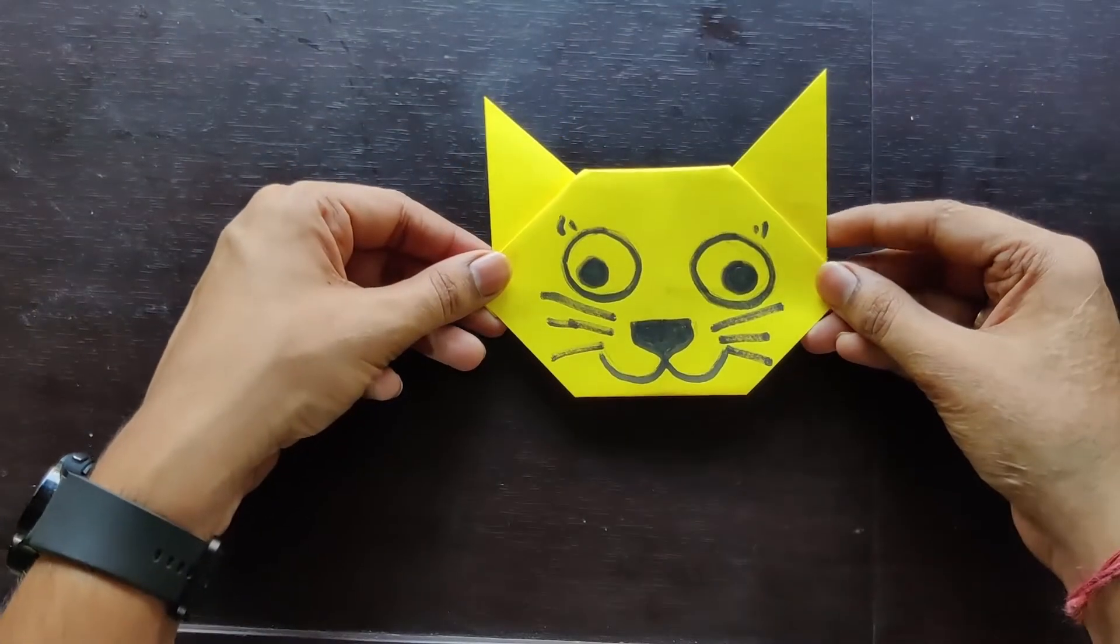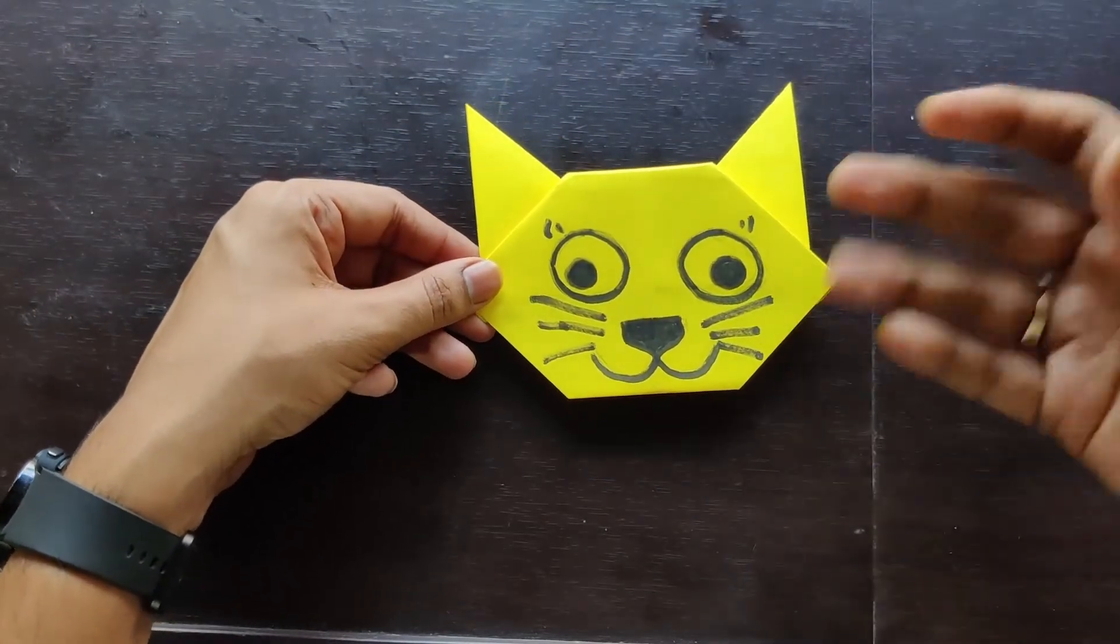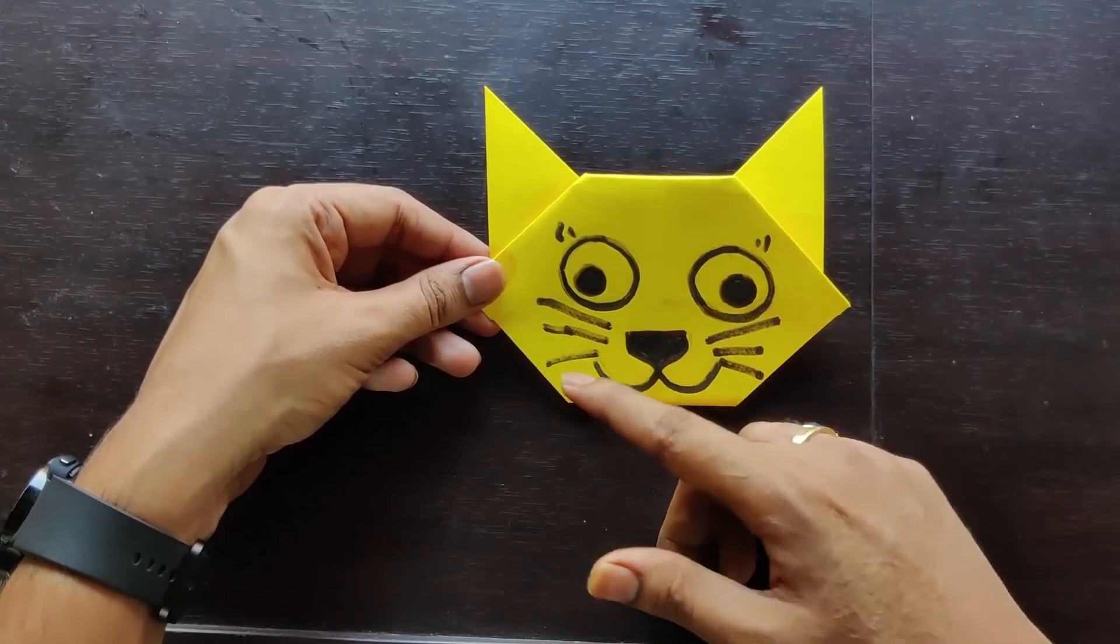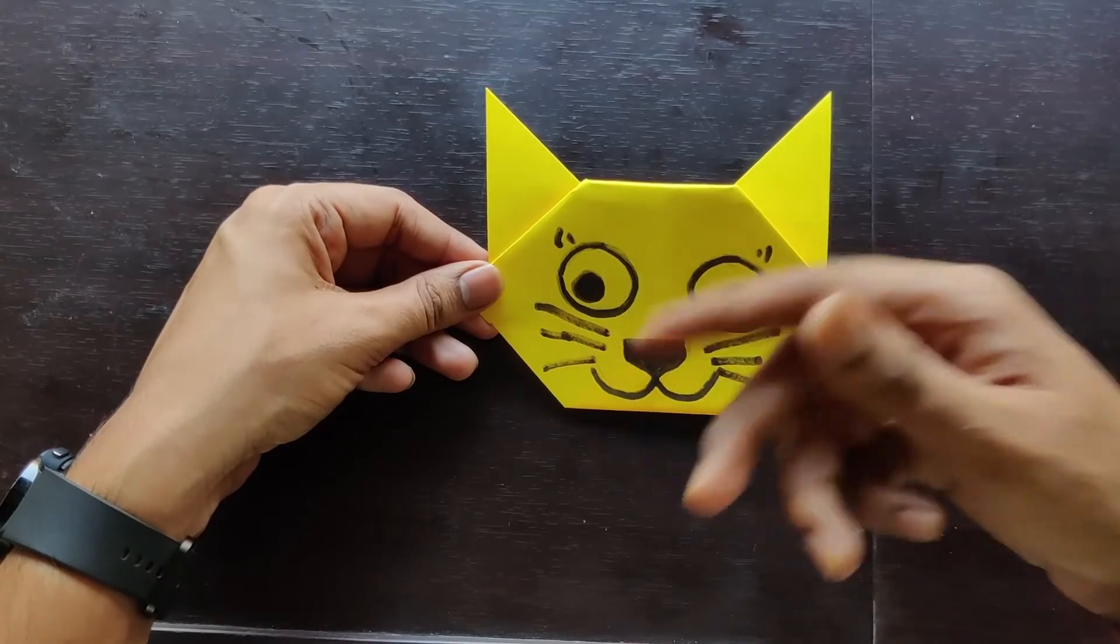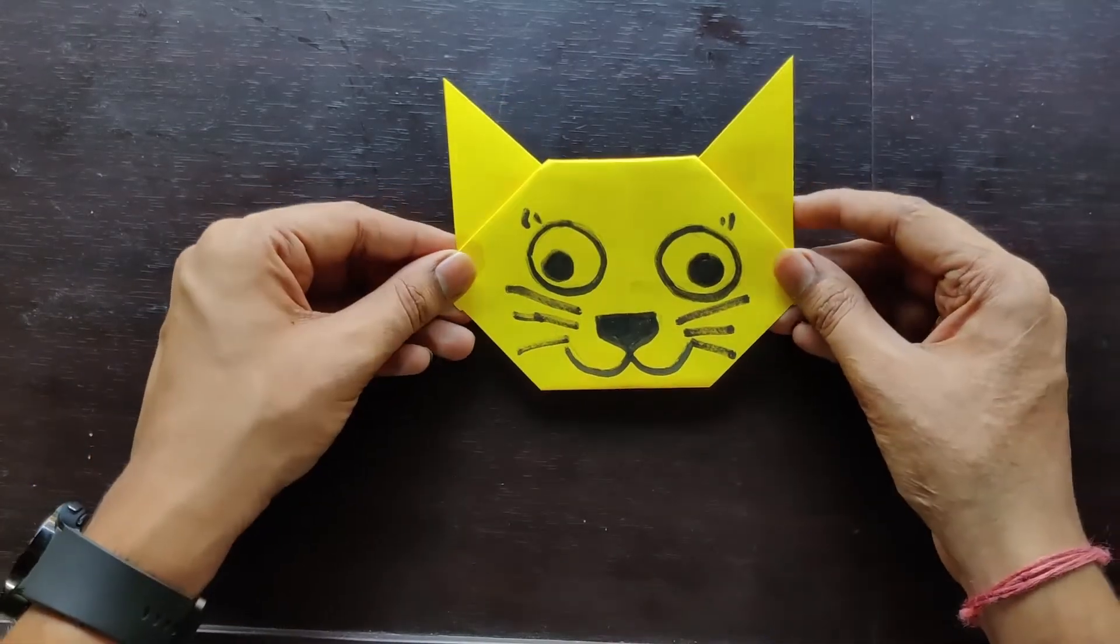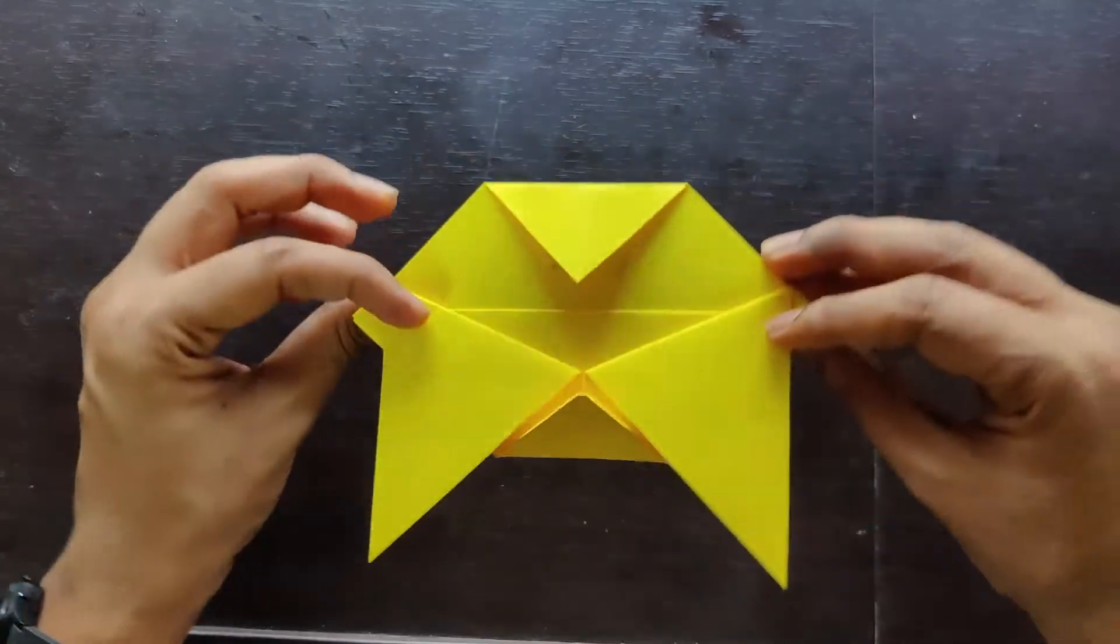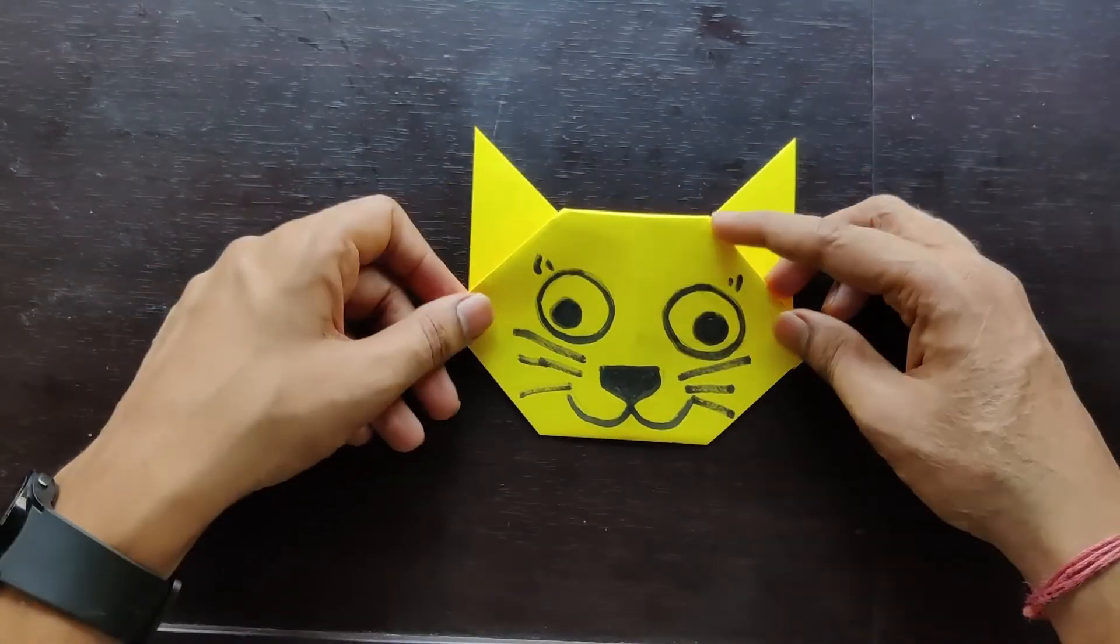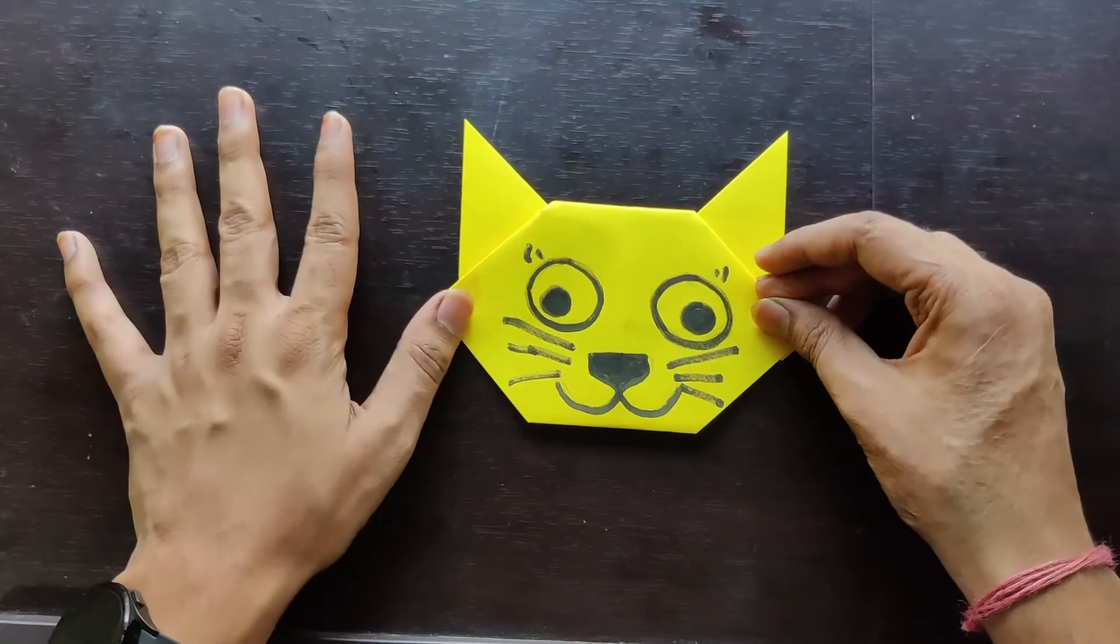So guys, this is the final cat model. You can draw it anywhere. I had drawn it this way and my marker was not working properly, so I redrew some of the parts. This is how the final cat model looks like and I hope you liked it. This is a very easy model, so go ahead and make one. Happy origami!